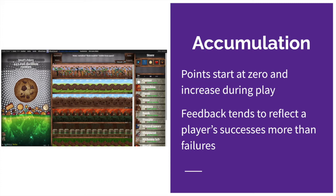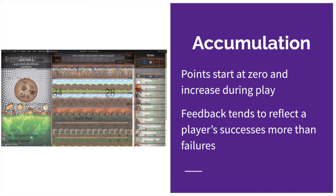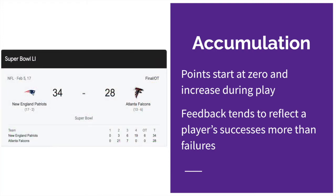Accumulation is also how most team sports are scored, which keeps things exciting because, at least in principle, even if one side falls way behind, they can always turn it around and keep scoring and win in spite of their past mistakes. Yes, I am a Patriots fan — I will never stop mentioning the 2017 Super Bowl; it's a great example of this principle. Accumulation scoring means that even if you have made a lot of mistakes, you can always make up for it and keep scoring more points and ultimately be successful in the end.